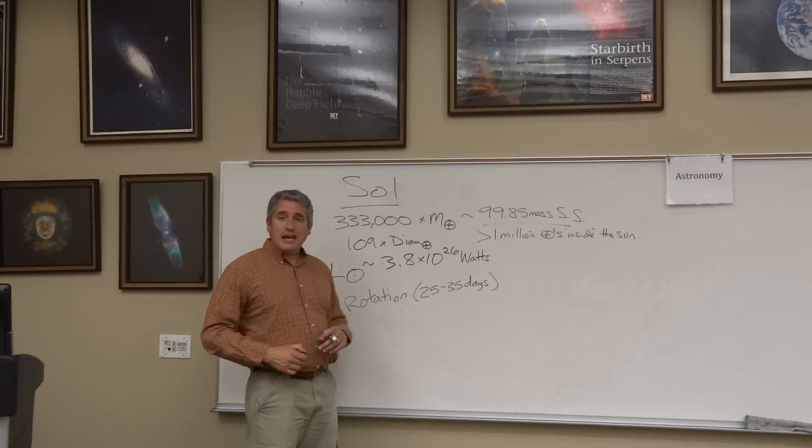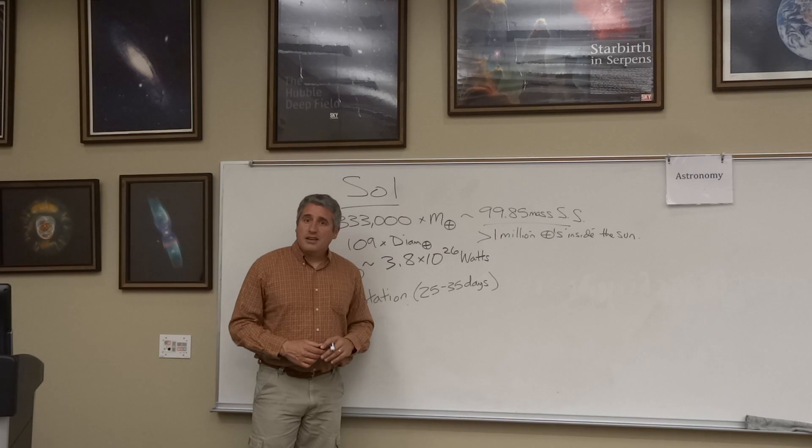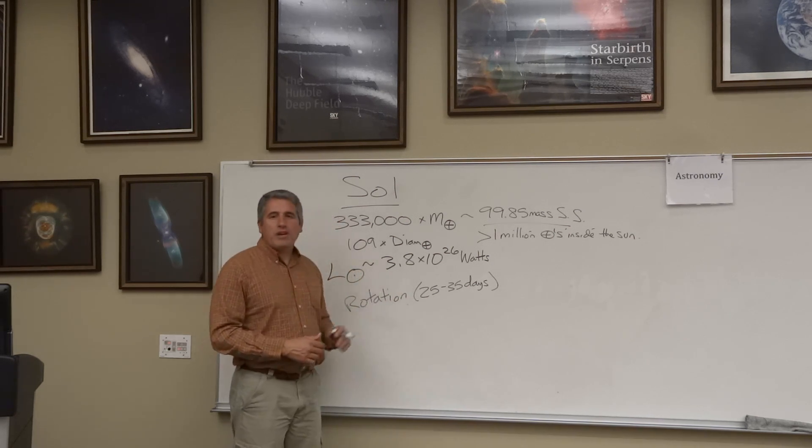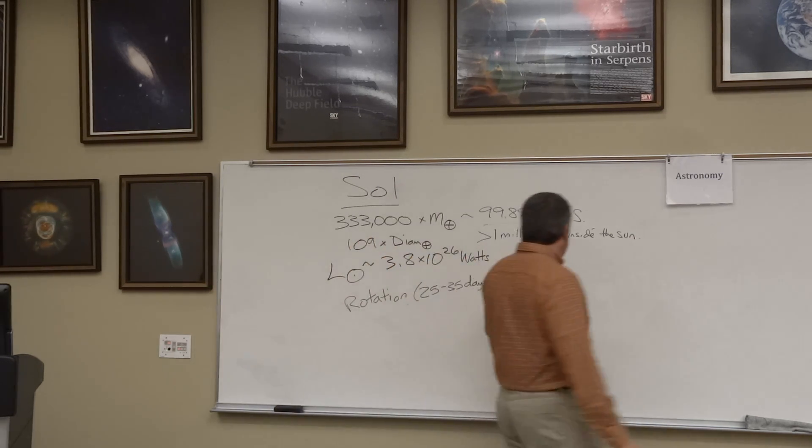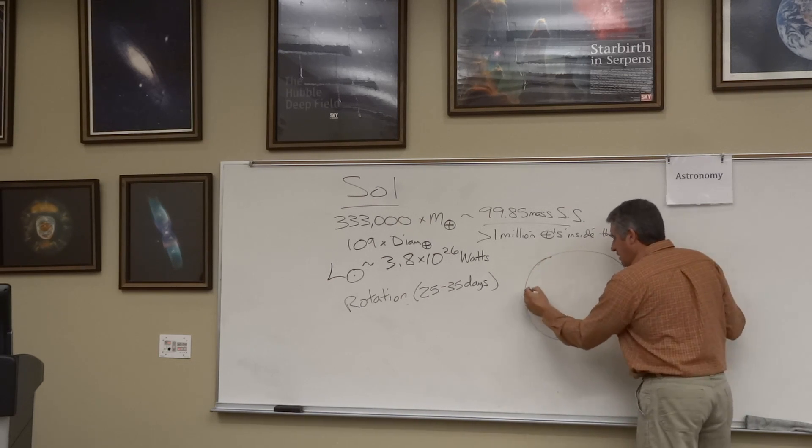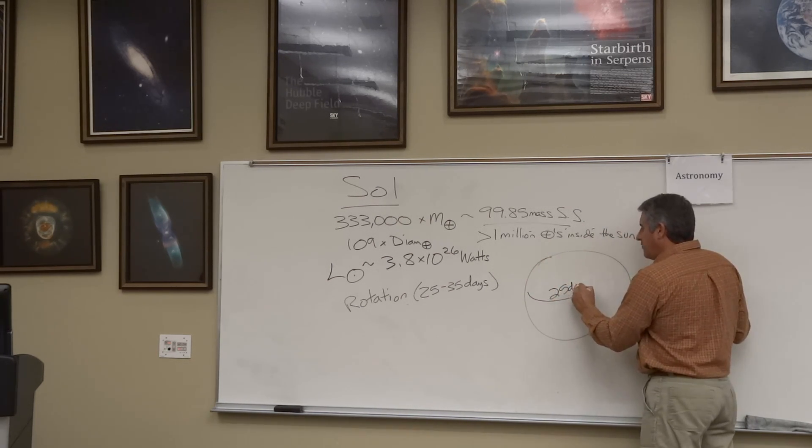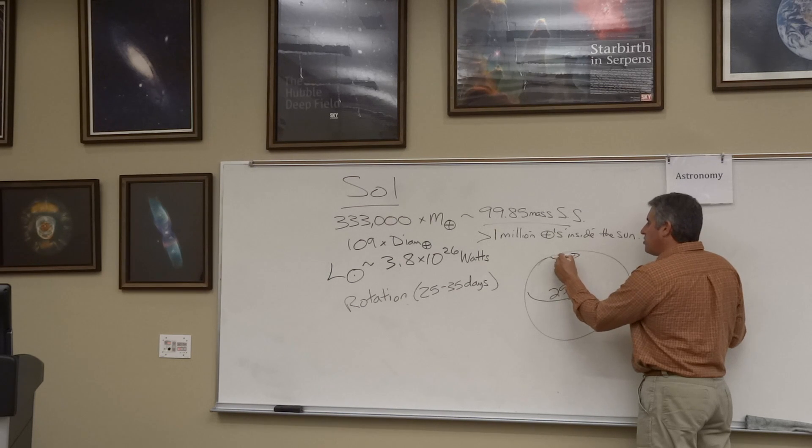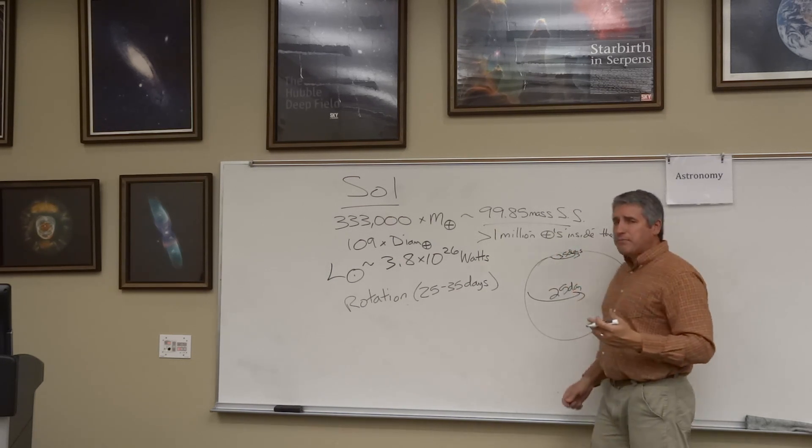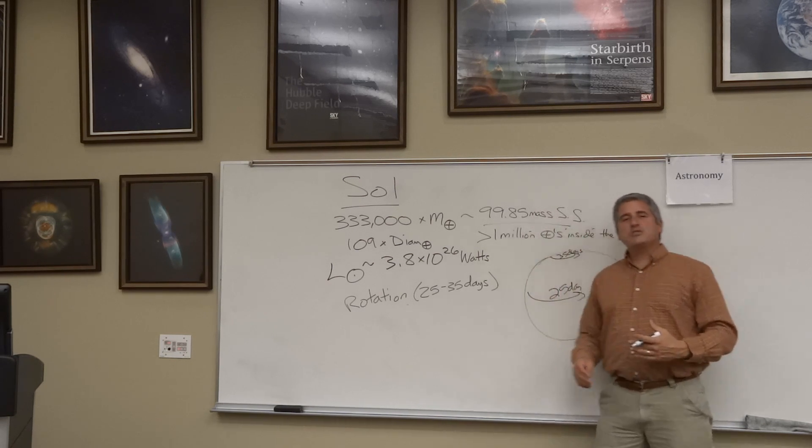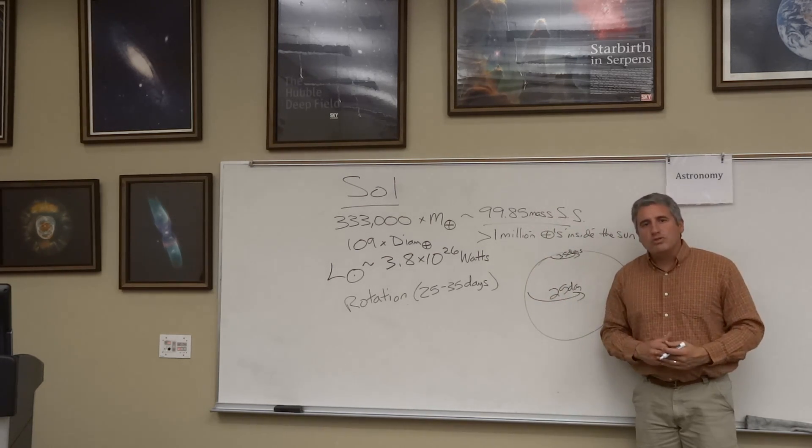The Sun rotates on its axis. But the rotation is differential. What I mean by that is, if you're at the Sun's equator, it takes 25 days to rotate once around. If you're at the poles, it takes 35 days. It rotates slower at the poles than it does at the equator. It is what's called a differential rotator.